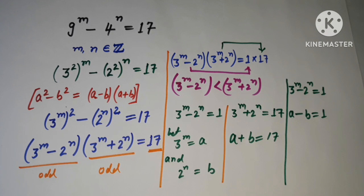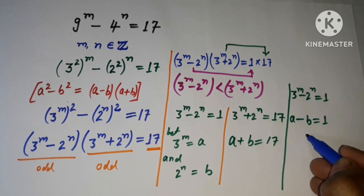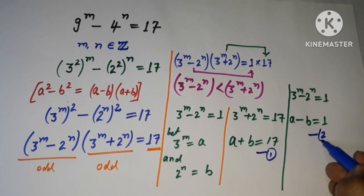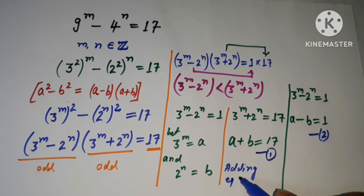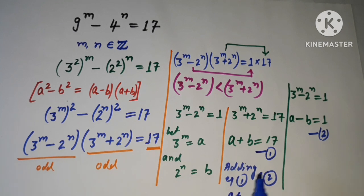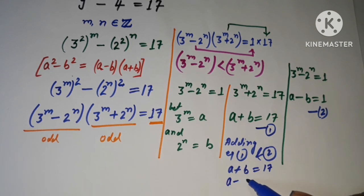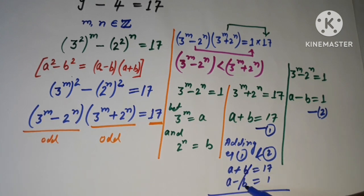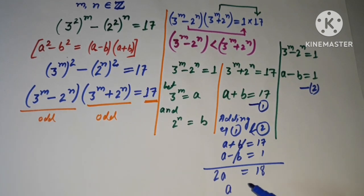So I'm going to use these two equations. Let this be equation 1 and this be equation 2. By adding equation 1 and equation 2: a plus b equals 17 and a minus b equals 1. After adding, the b terms cancel.